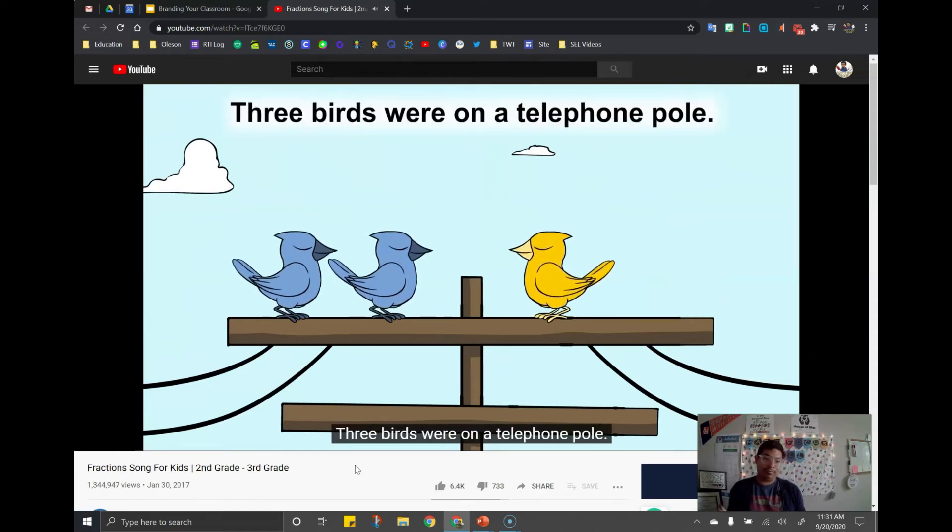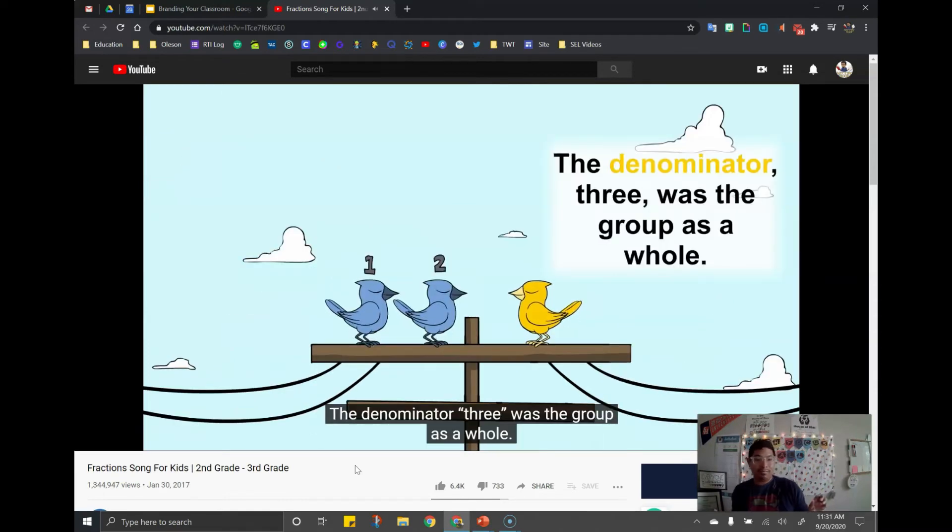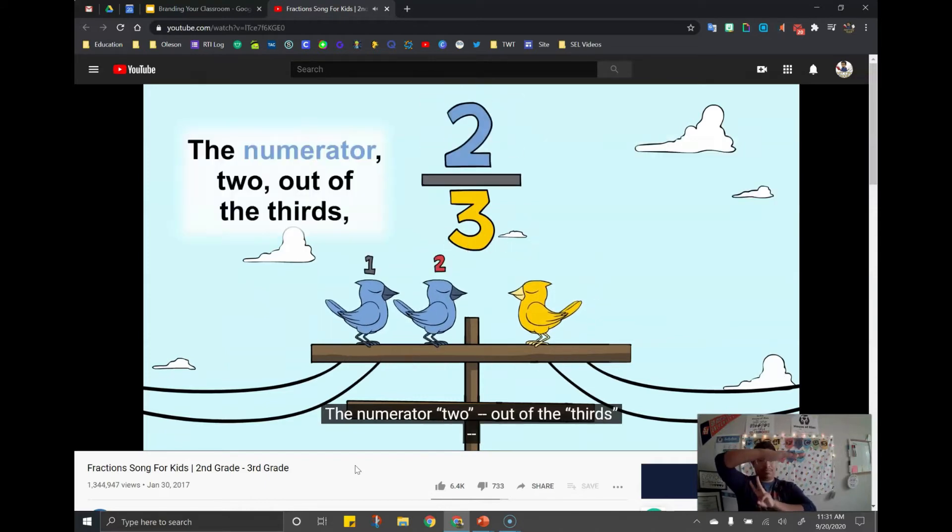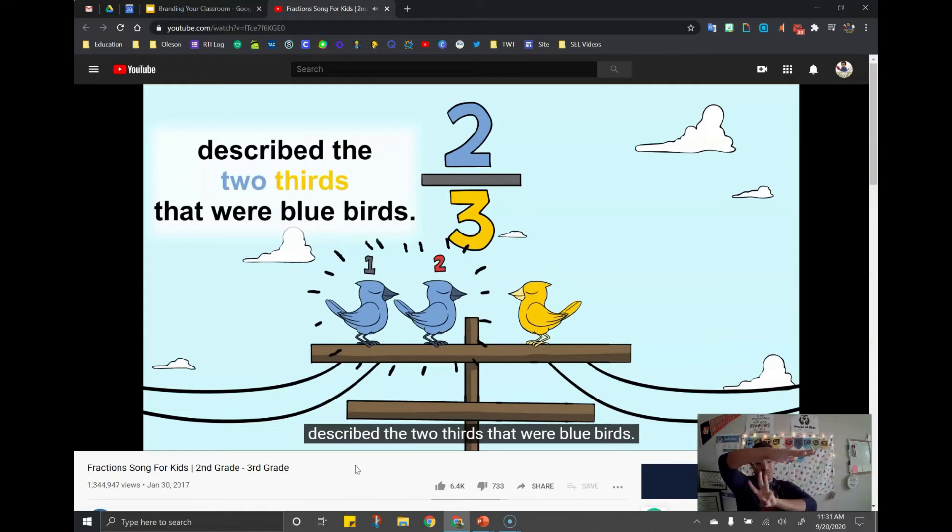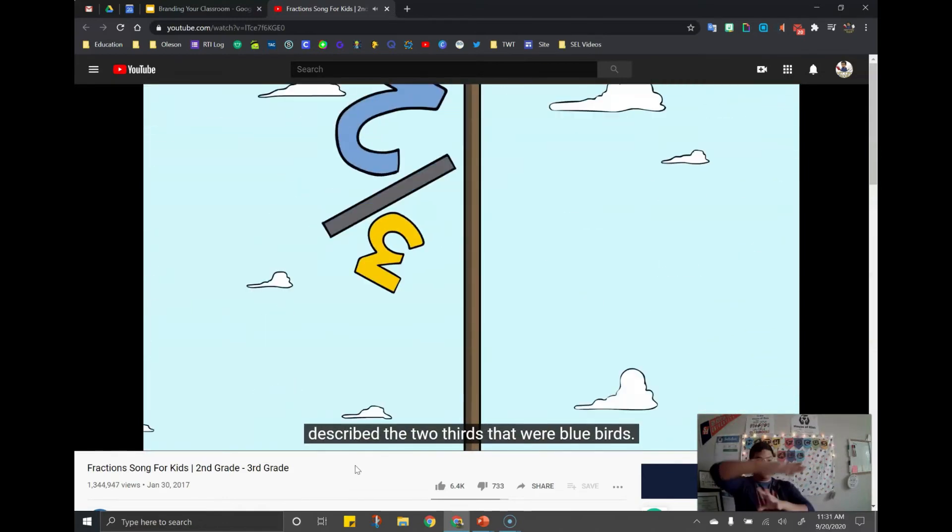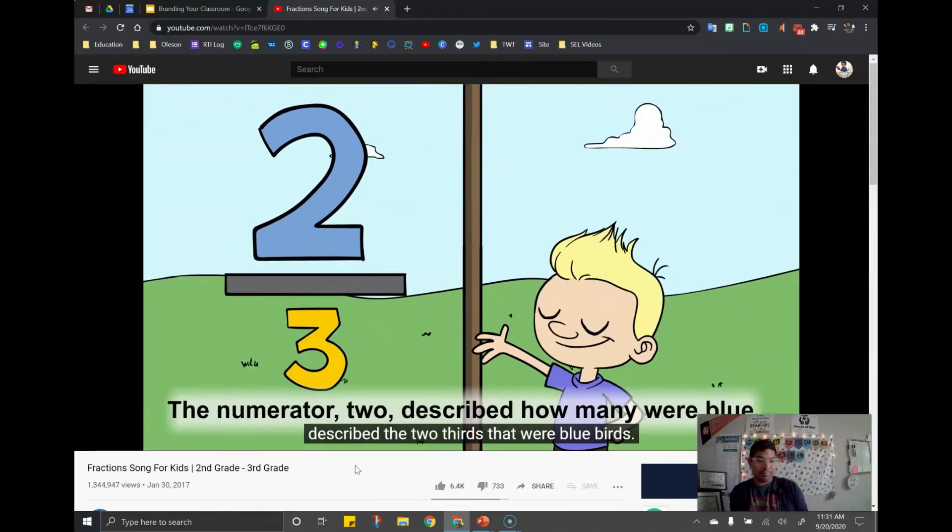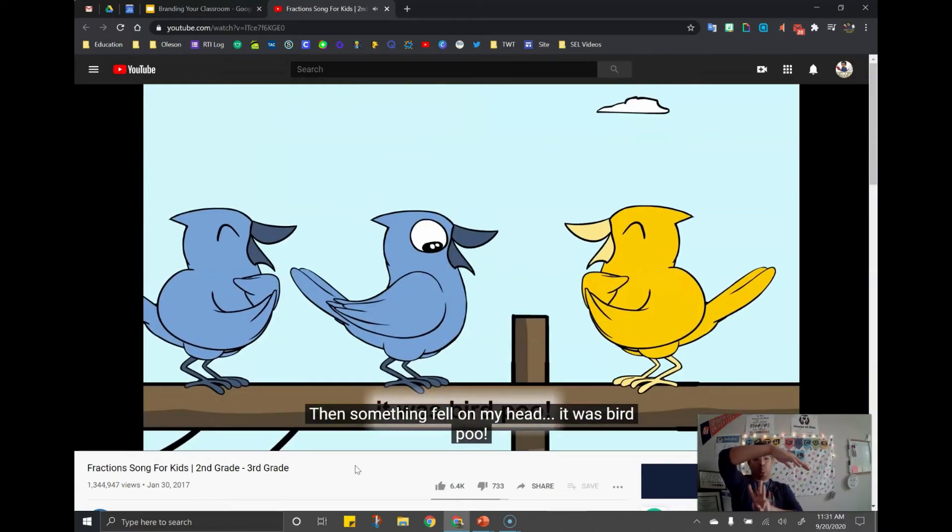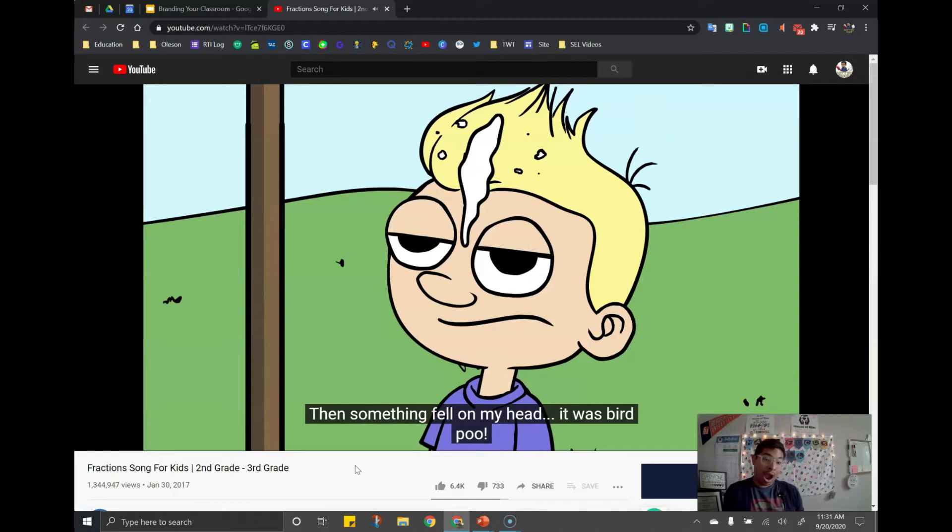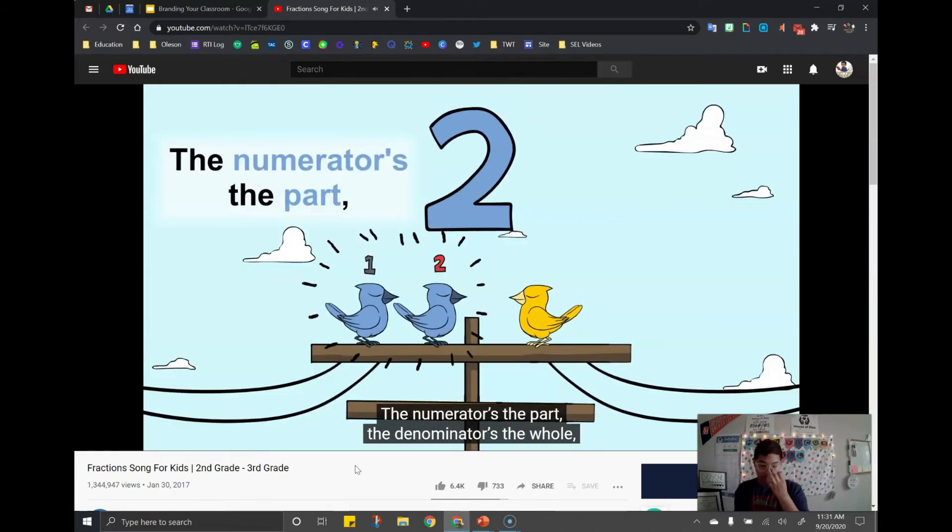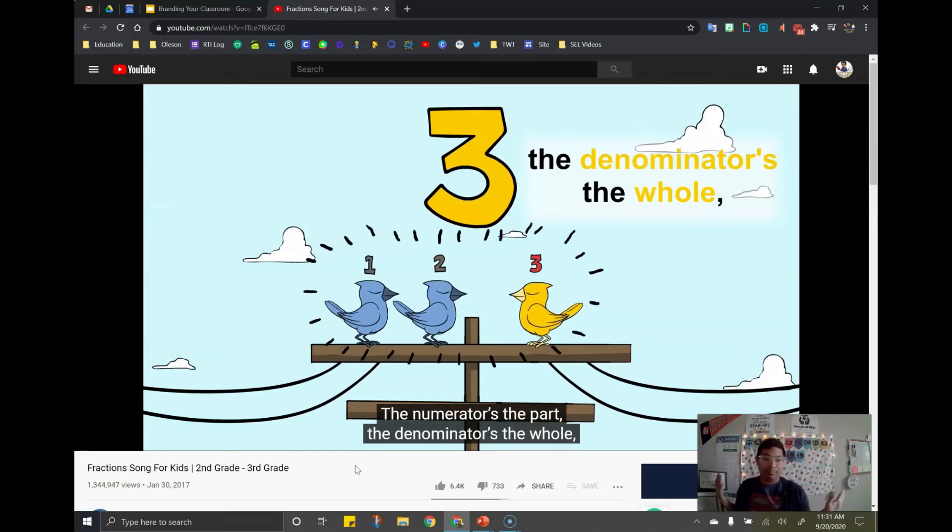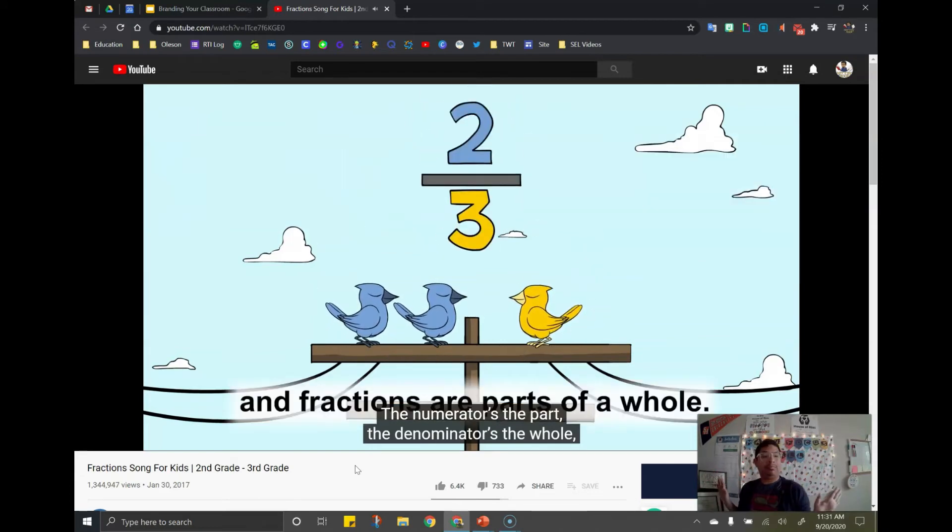Three birds were on a telephone pole. The denominator three was the group as a whole. The numerator two, out of the thirds, described the two-thirds that were bluebirds. The numerator two described how many were blue. Then something fell on my head. It was bird poo. The numerator's the part. The denominator's the whole. The fractions are parts of a whole.